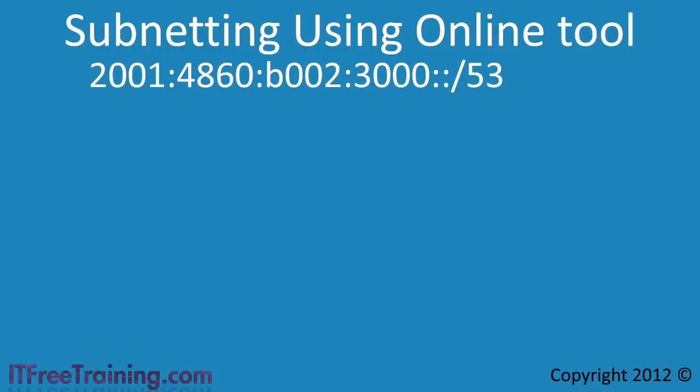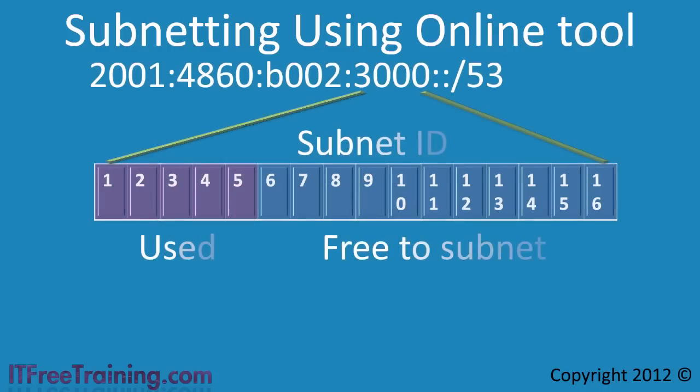Let's say that you are given the following IPv6 address. Remember that the subnet ID is always 16 bits. 5 bits in the subnet ID have already been used since the network prefix is 53. This leaves us 11 bits.